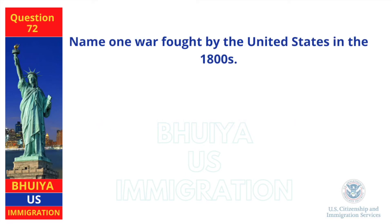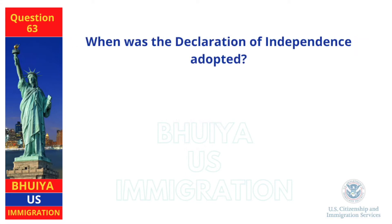Name one war fought by the United States in the 1800s. Civil War. When was the Declaration of Independence adopted? July 4, 1776.